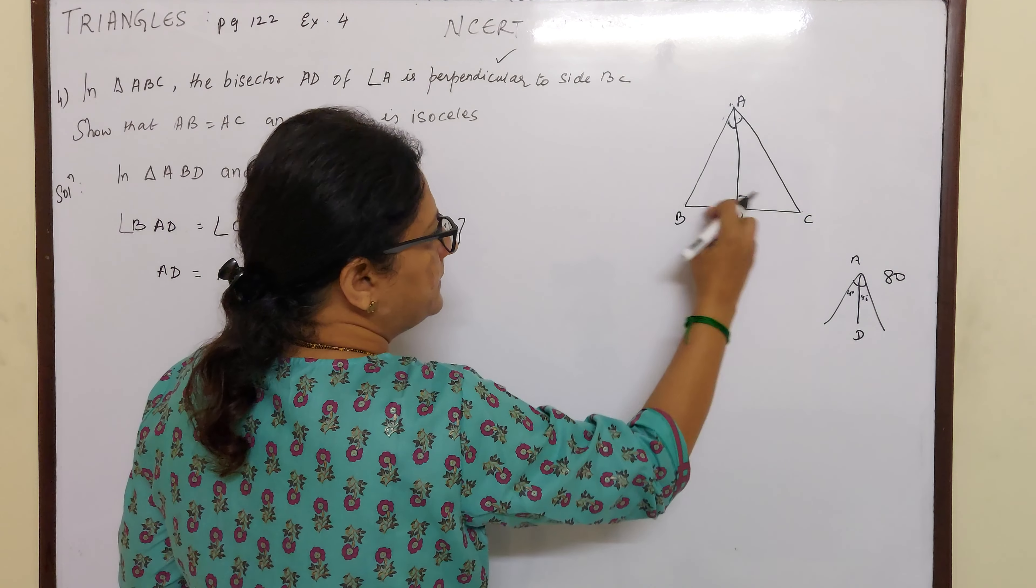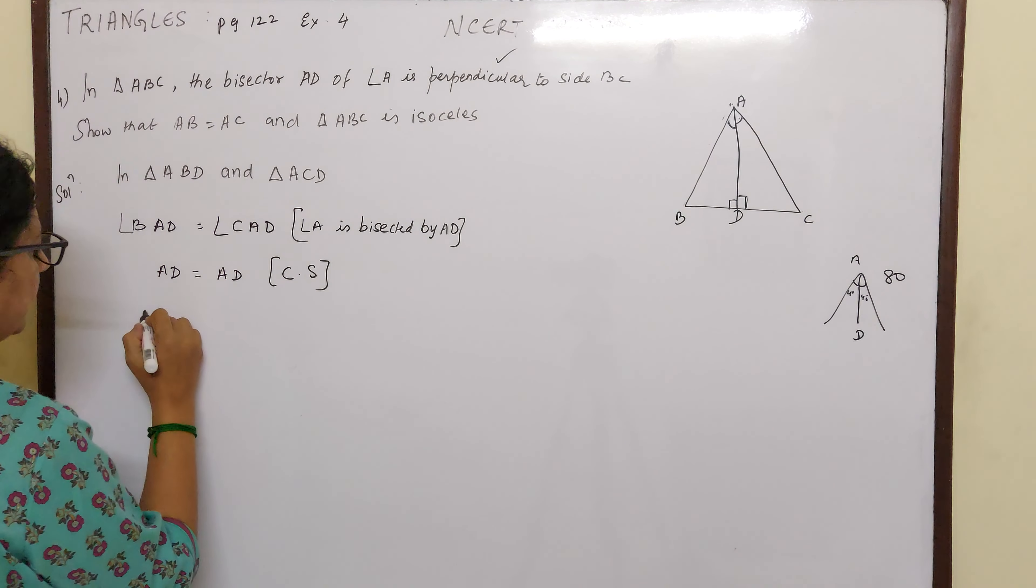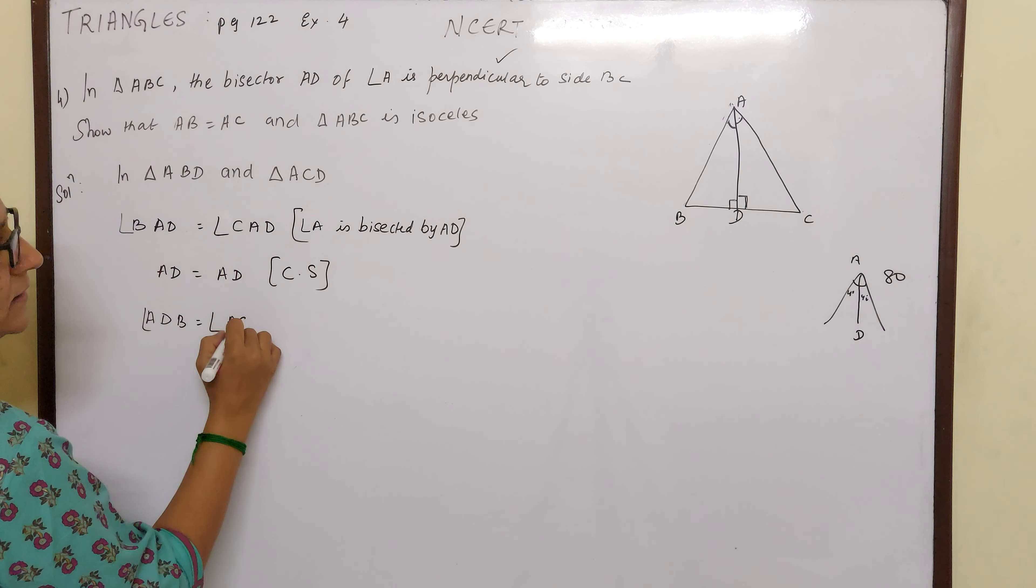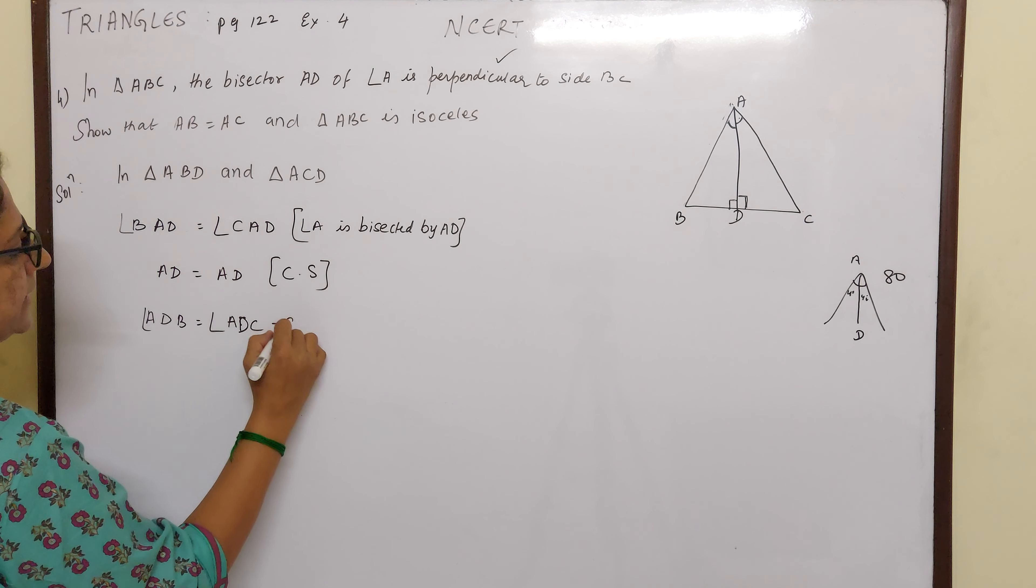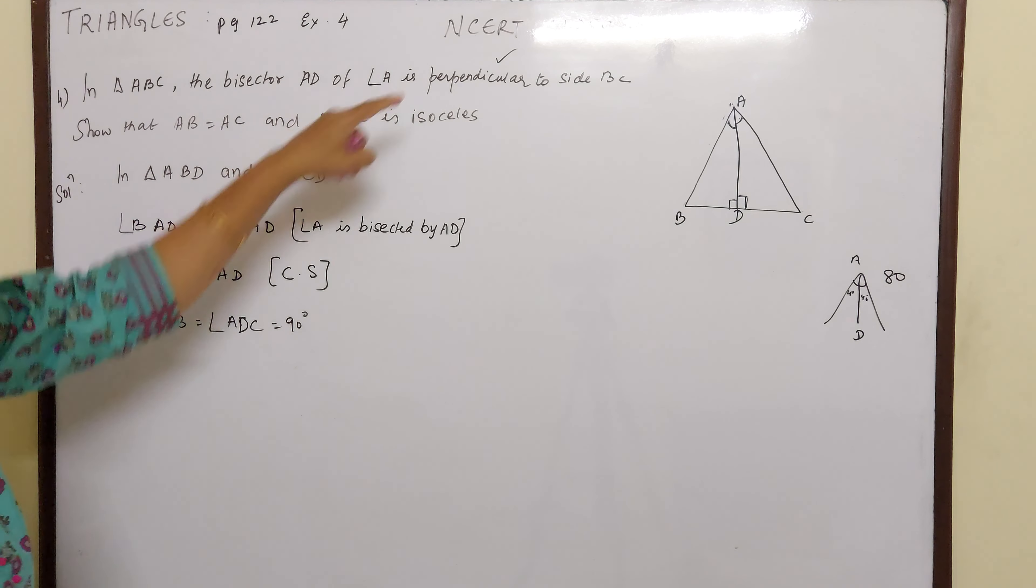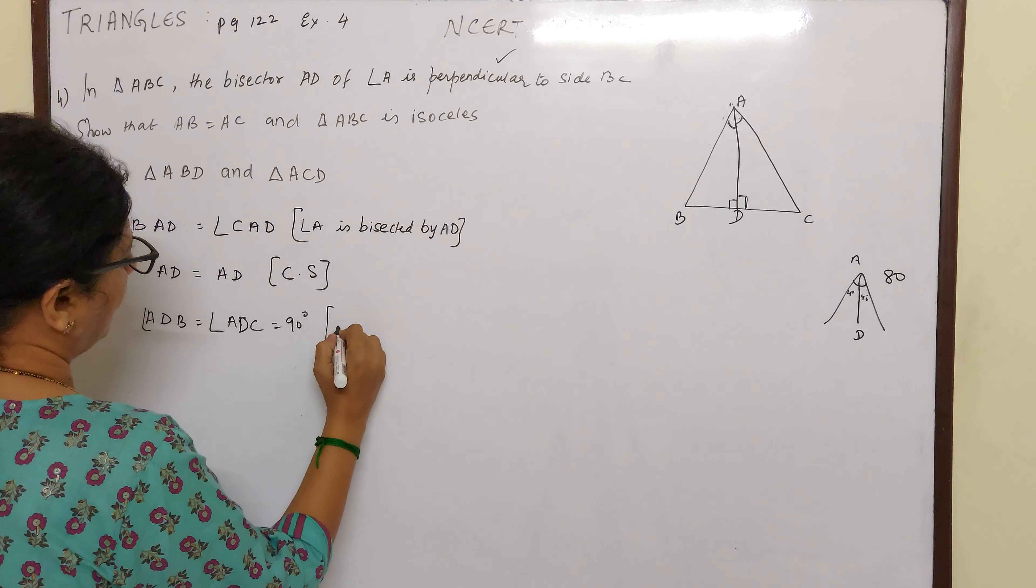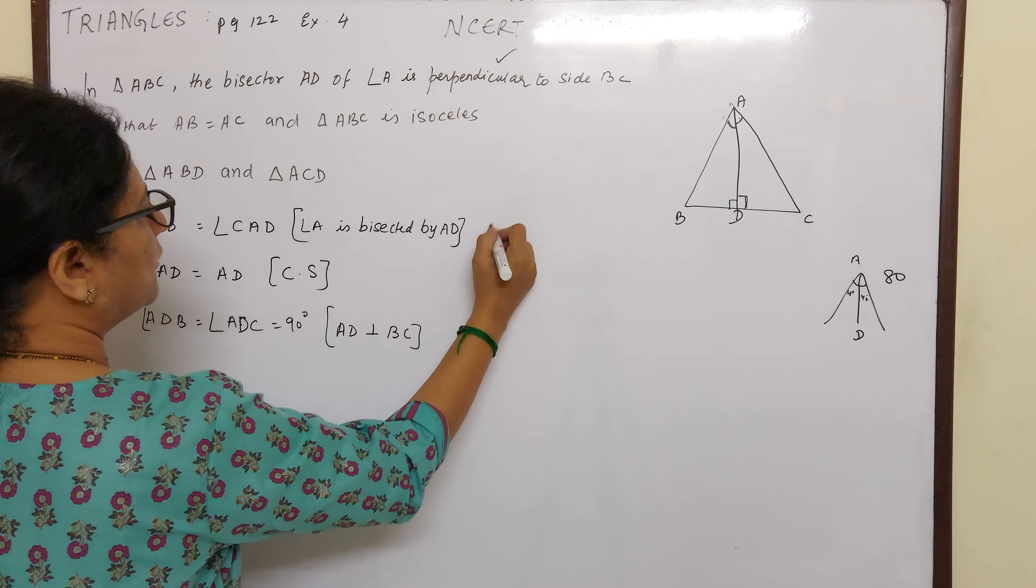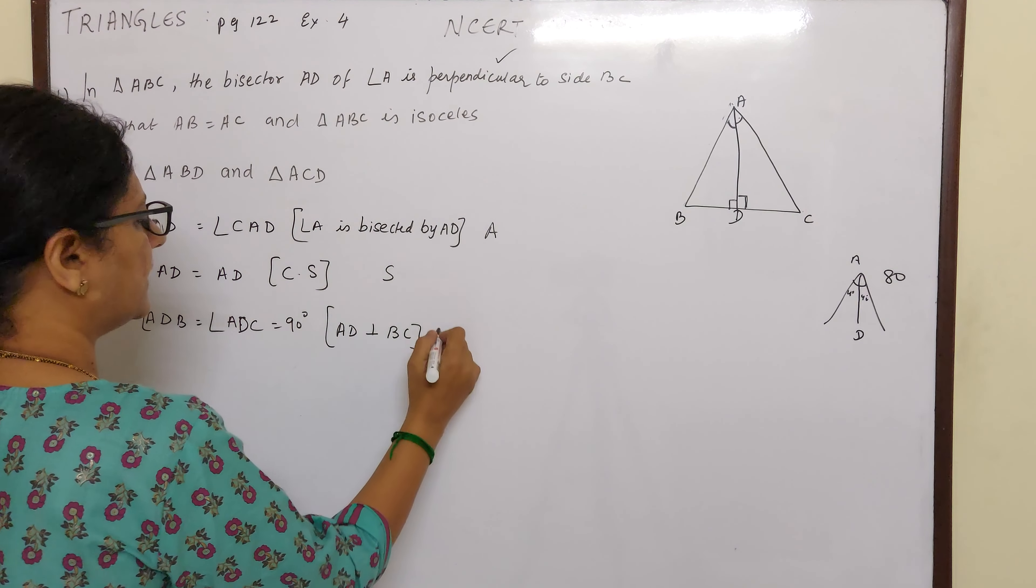Next, ADB is equal to ADC 90 degrees. Angle ADB is equal to angle ADC 90 degrees. Why? Because it is perpendicular. AD perpendicular to BC. So now I have got an angle, a side, and an angle.